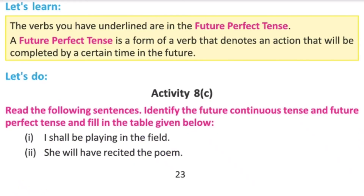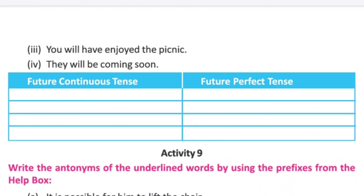Activity 8c: Read the following sentences, identify future continuous tense and future perfect tense, and fill in the table. 'I shall be playing in the field' — future continuous tense. 'She will have recited the poem' — future perfect tense. 'You will have enjoyed the picnic' — future perfect tense. 'They will be coming soon' — future continuous tense.